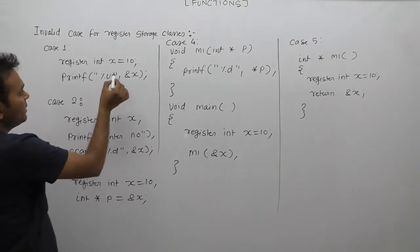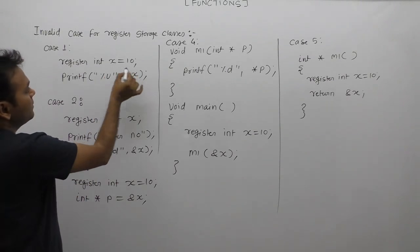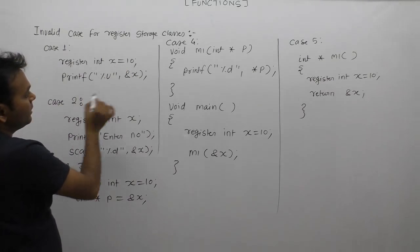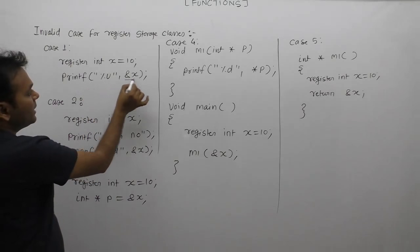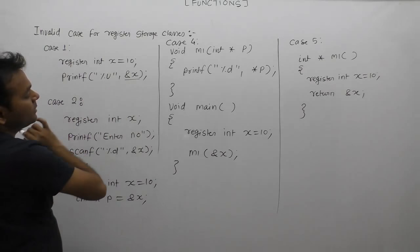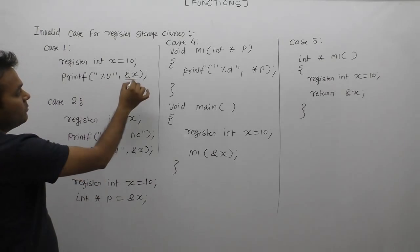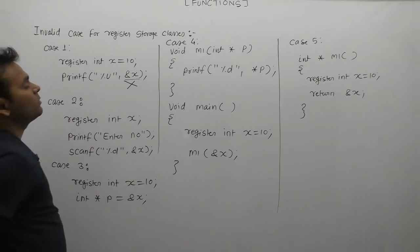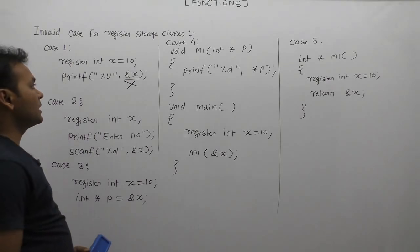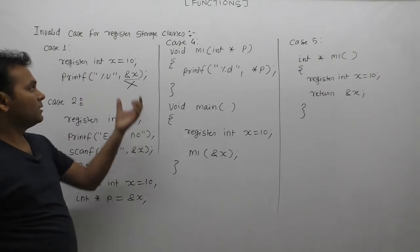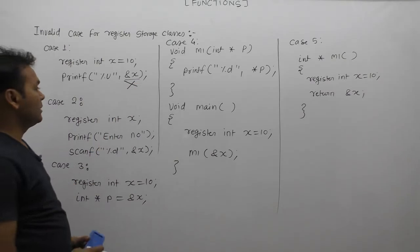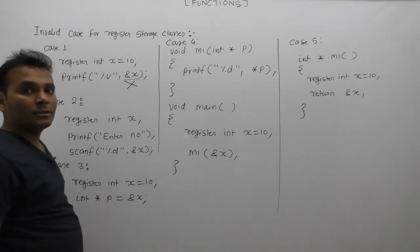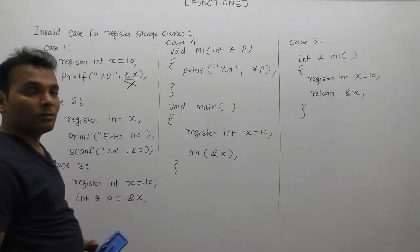In Case 1, we are declaring variable X with initial value 10, and we are displaying the address of X. As we know, we cannot access the address of register variables, so this is an invalid case.